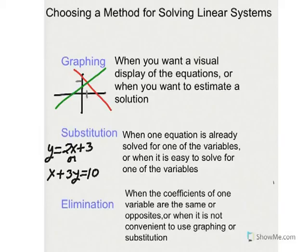The last one, elimination, is used when the coefficients of one variable are the same or opposites, like in the equation over here on the left. The negative 2x and the positive 2x have opposite coefficients, so this would be a good candidate for elimination. The other issue is when it's just not convenient to use substitution or graphing.